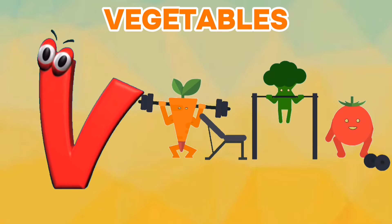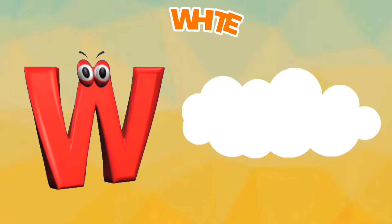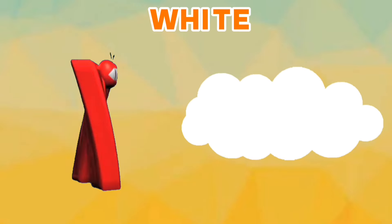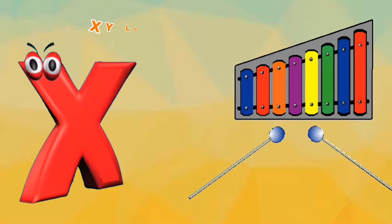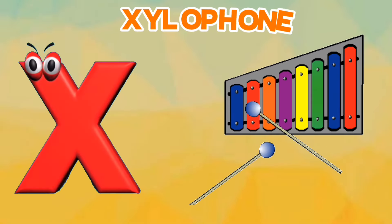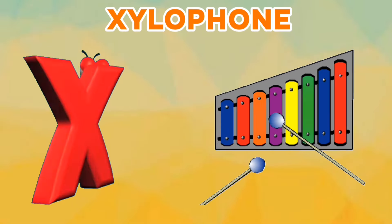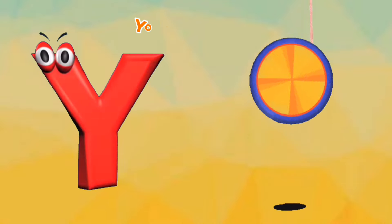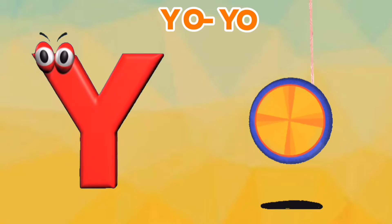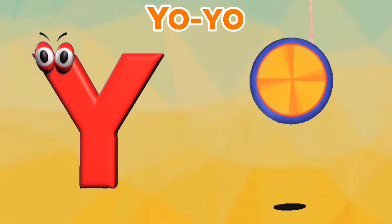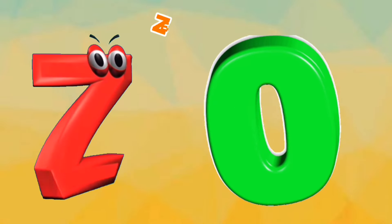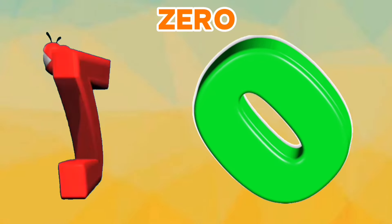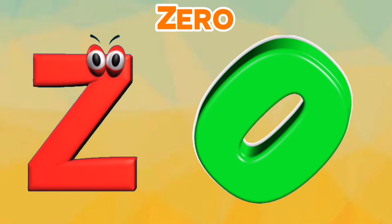Vegetables. W is for White. W, W. White. X is for Xylophone. X, X. Xylophone. Y is for YOYO. Y, Y. YOYO. Z is for Zero. Z, Z. Zero.